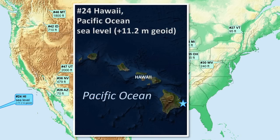Number 24 is Hawaii, where the entire Pacific Ocean coast is at sea level. The geoid heights here are very high, associated with the thin mantle at the Hawaiian hotspot. The geoid low point is the easternmost point on the Big Island of Hawaii.